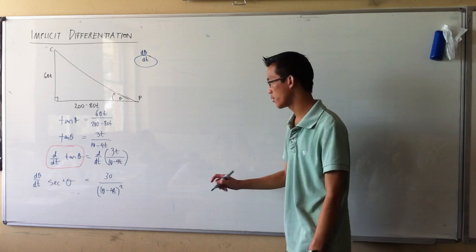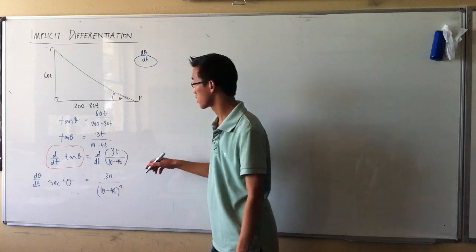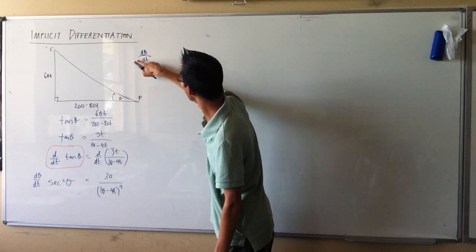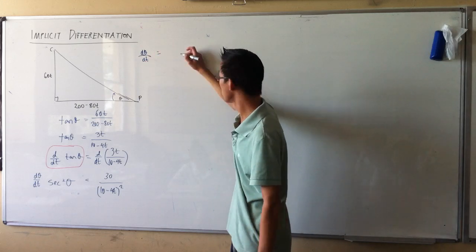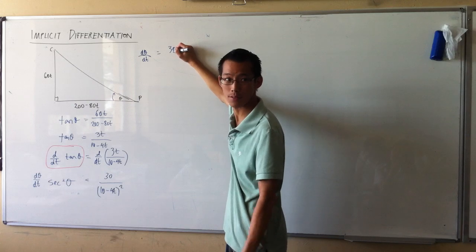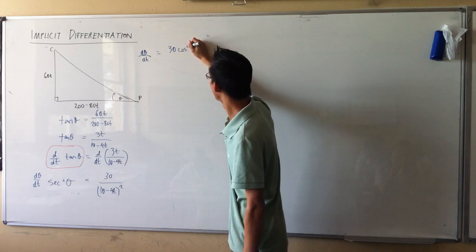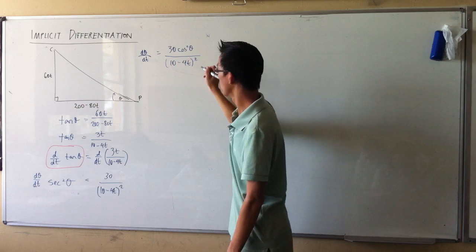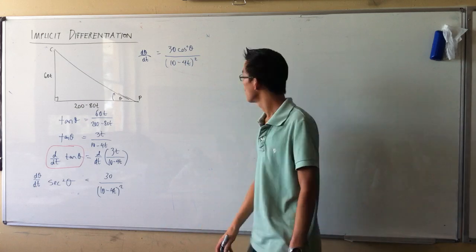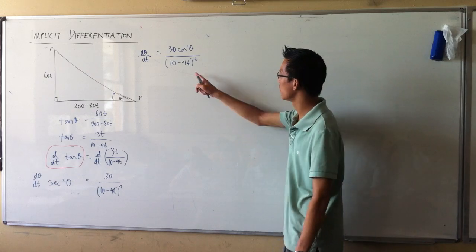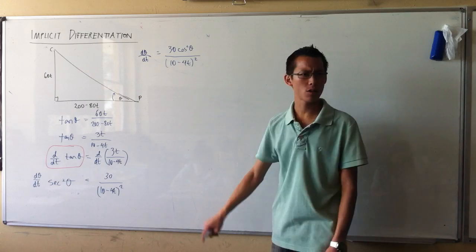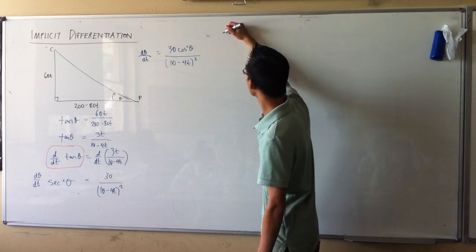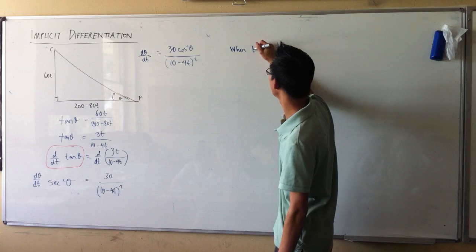Alright, now I suppose now I can kick this over the other side so I can get dθ/dt on its own. So that should be equal to minus 3 over sec² θ times 10 minus 4t all squared, or rather minus 3 cos² θ over 10 minus 4t all squared. So now I think about this and I say, look, I want to know, I think the question said when t is equal to 2, right? Is that what I was interested in? Yeah, when t is equal to 2, after 2 seconds.